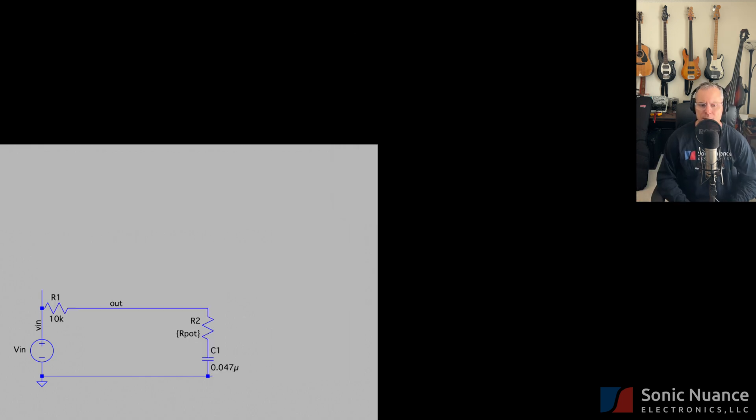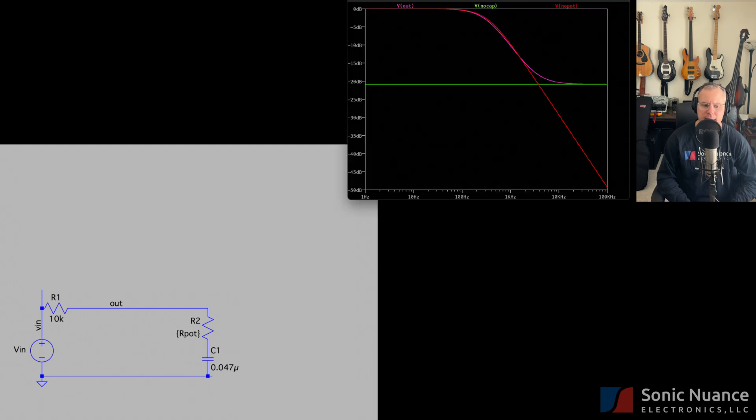Something interesting happens when we combine both the pot and the cap to make our tone control section. As shown in the next plot, it is essentially the combination of the low-pass filter plot and the voltage divider plot. This is important, so I'll say it once again. It is essentially the combination of the low-pass filter plot and the voltage divider plot.